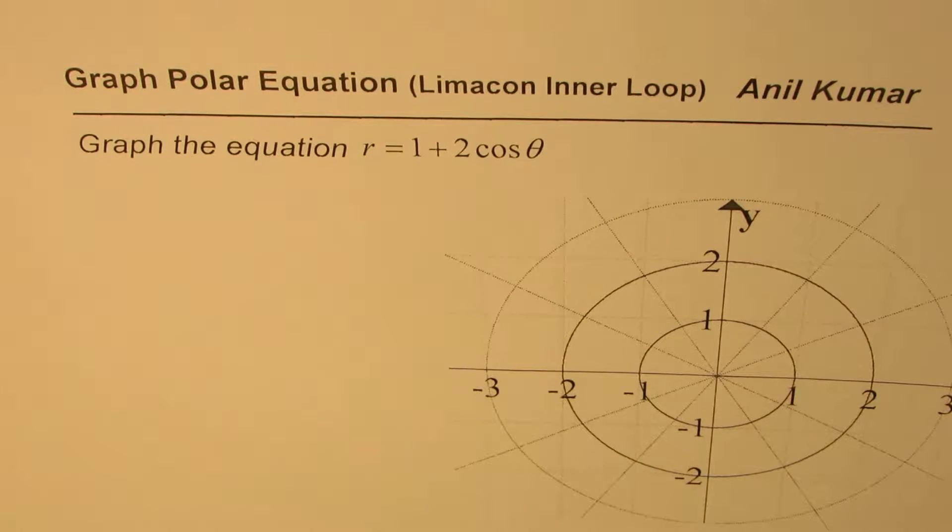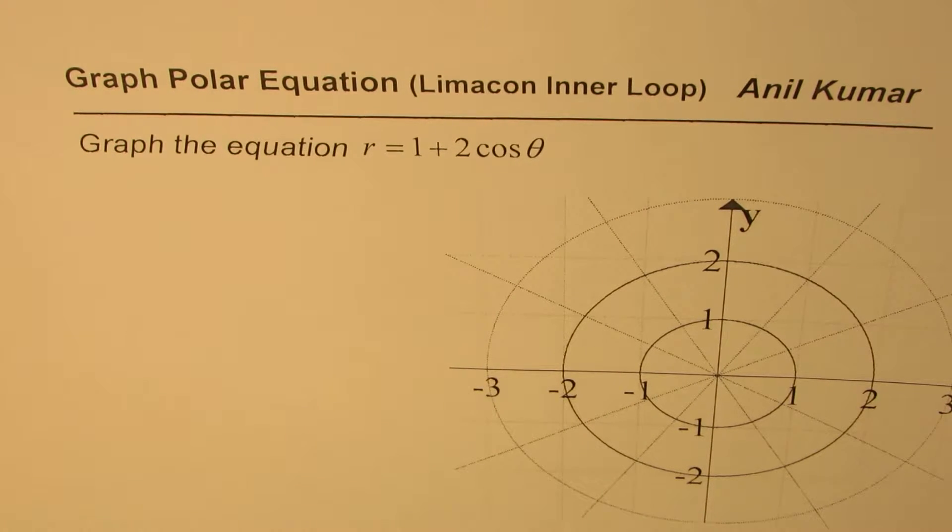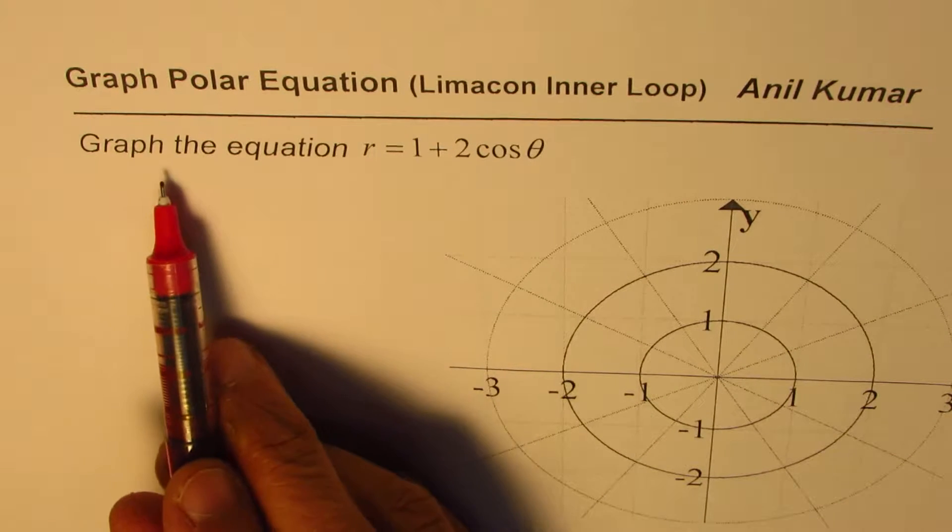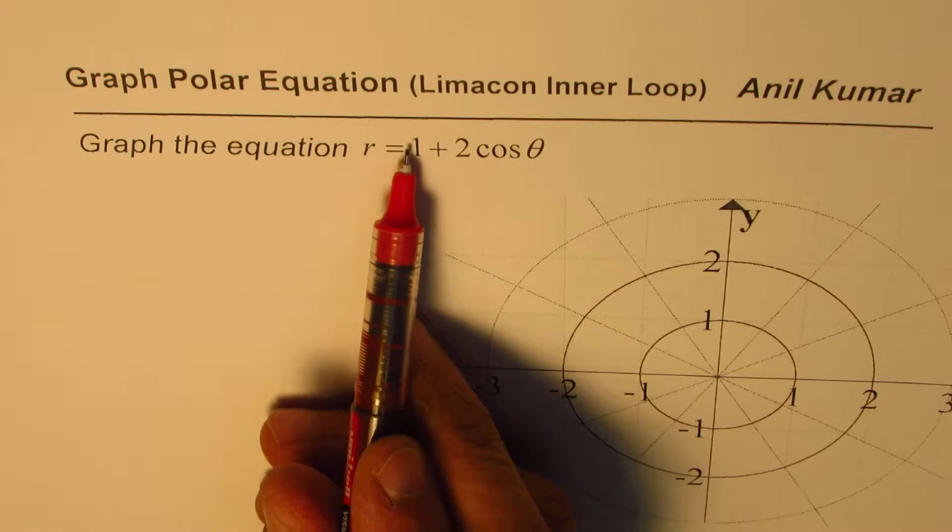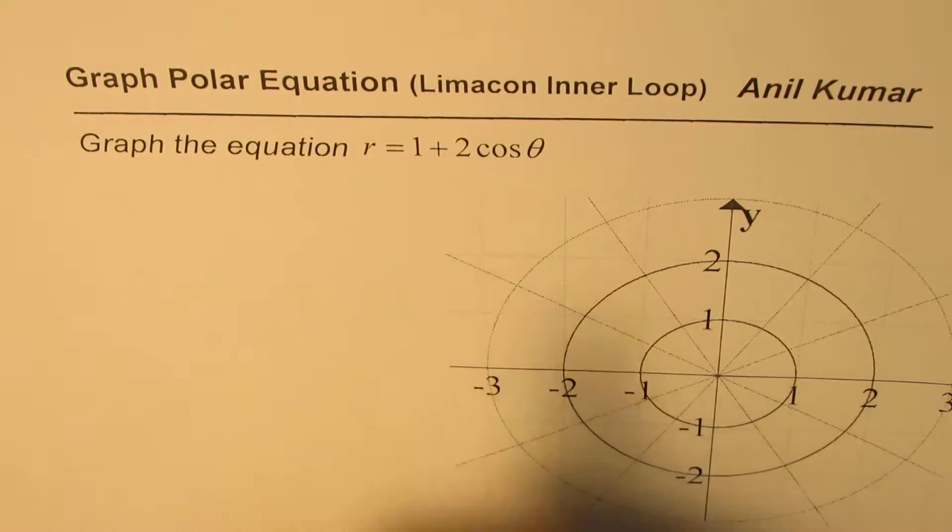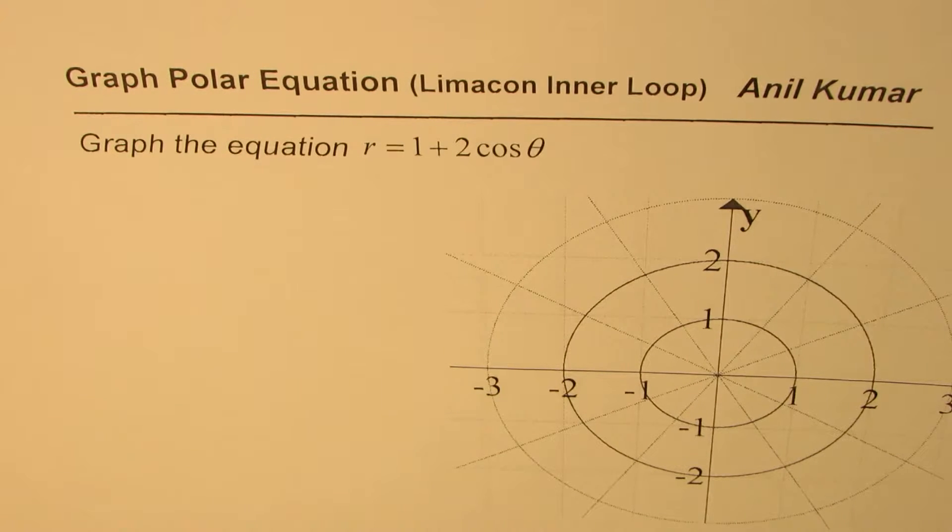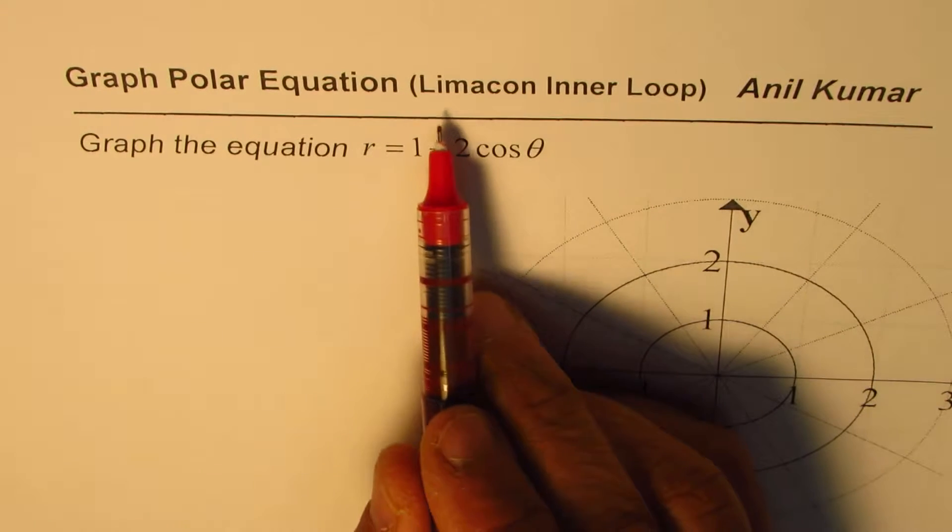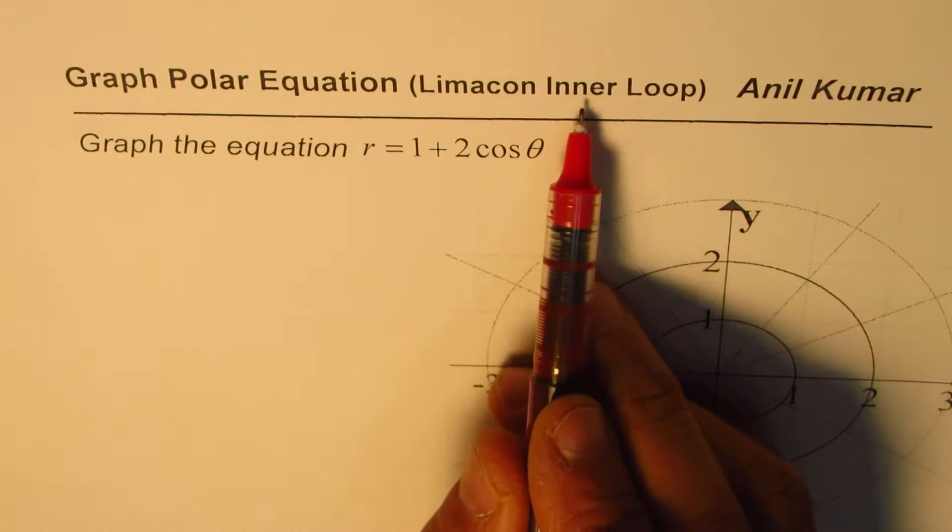I'm Anil Kumar and here is another very interesting question to graph polar equation. The question here is to graph the equation r equals 1 plus 2 cos theta. You will notice this number 2 is more than 1, so it's kind of a special group of graphs and we normally call them Limaçon with inner loop.